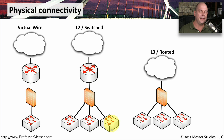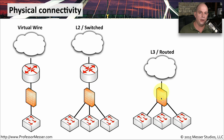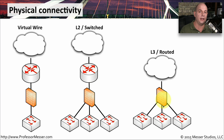Most firewalls, though, are going to connect at layer 3. This is a very common way to connect a firewall, so we don't even need an external router. We connect directly from the internet into our device at layer 3. It has an IP address on the outside and IP addresses on the inside. We are then able to route between those using dynamic routing protocols or static routing, and it effectively has the same functionality as if you had a physical router in place.